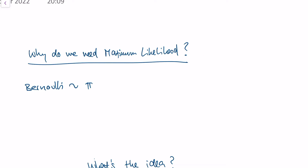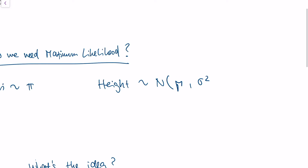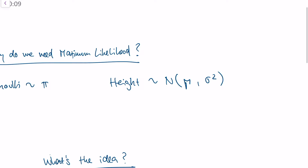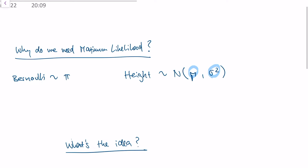Another example: we know that the height of human beings is normally distributed, with a certain mean and a certain variance. The mean is mu, the variance is sigma squared. But how do we actually calculate those parameters — mu and sigma squared? Maximum likelihood gives us a method to do this. Whenever we know that something is distributed in a certain way, maybe normally or Bernoulli distributed, maximum likelihood gives us a method to estimate the distribution parameters: the mu, the sigma squared, or the pi.